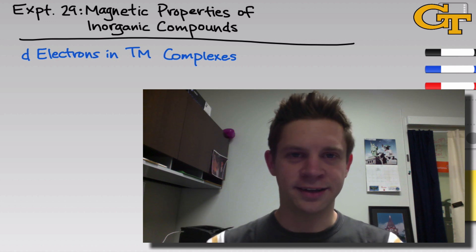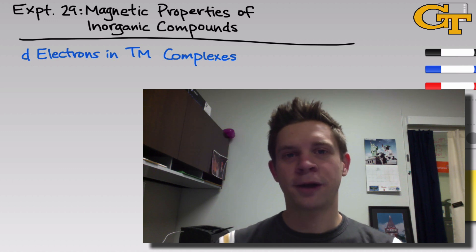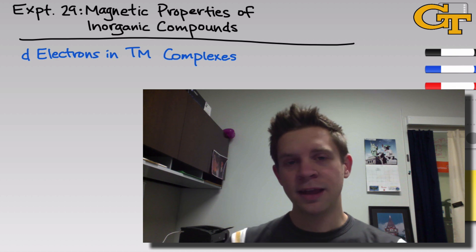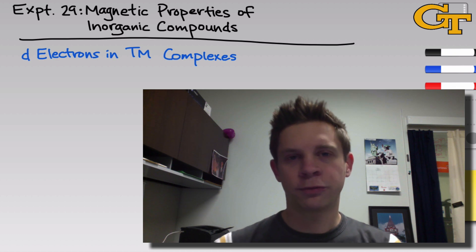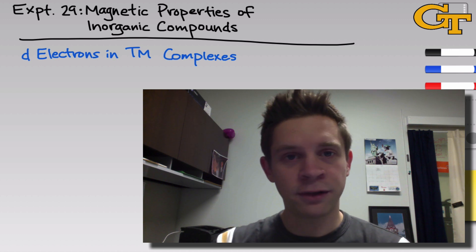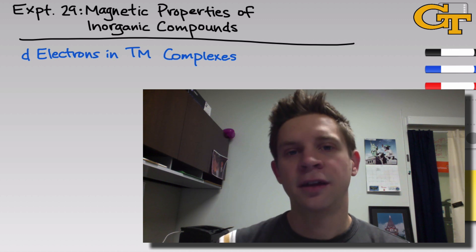Experiment 29 in CHEM 1212 is titled Magnetic Properties of Inorganic Compounds. In this experiment, we're going to explore the properties of coordination complexes in more detail and specifically look at the magnetic properties of these compounds.